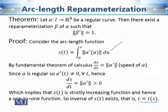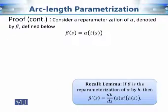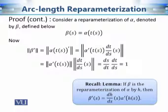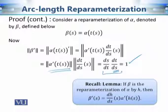The only thing remaining is to prove that the new parameterization beta = alpha(t(s)) is a unit speed parameterization. We calculate its speed: the derivative of alpha(t(s)) equals alpha'(t(s)) · (dt/ds) by the chain rule. Taking the norm, this equals ||alpha'(t(s))|| · |dt/ds|. Since dt/ds is positive, and ||alpha'|| = ds/dt by the Fundamental Theorem, these two rates cancel each other out. Hence the speed of beta equals 1, confirming it is a unit speed parameterization.